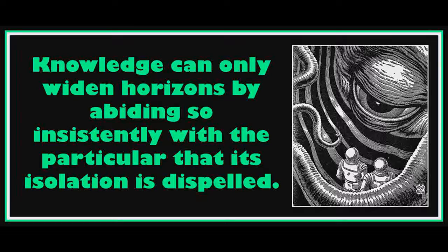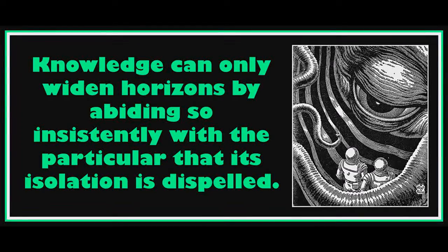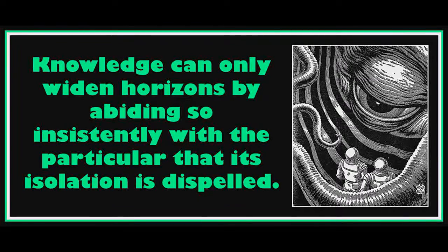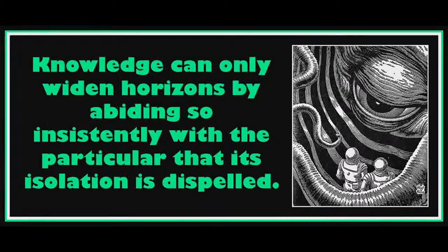Nietzsche, who too often thought in over-wide horizons himself, was nevertheless aware of this. He who seeks to mediate between two bold thinkers, he writes in the Gay Science, stamps himself as mediocre. He has not the eyes to see uniqueness; to perceive resemblances everywhere, making everything alike, is a sign of weak eyesight.